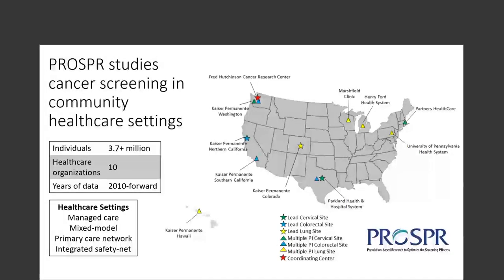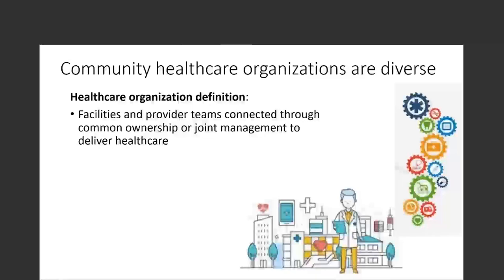One of the key goals of PROSPER is to evaluate multi-level influences — including organizational-level factors — on improving the quality of cancer screening care. Our first step was to have a definition of what we mean by healthcare organizations when comparing across them. We adapted the AHRQ definition developed through the compendium work. You'll notice the word 'hospital' isn't in the definition because we had a system that didn't own a hospital. Our definition is: the facilities and provider teams connected through common ownership or joint management to deliver healthcare.